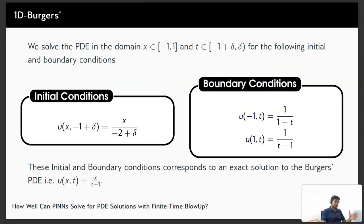Now what is our experimental setup? We solve the PDE in the domain x in [-1, 1] and t is in [-1 + delta, delta] for the following initial and boundary conditions. These initial and boundary conditions correspond to an exact solution to the Burgers' PDE that is u equals x/(t - 1), and here you can see that this blows up when t goes to 1.